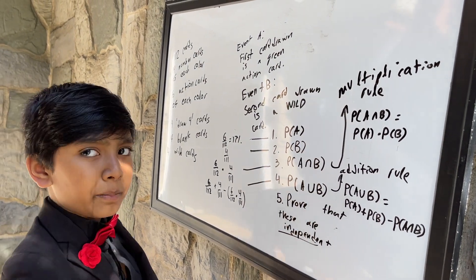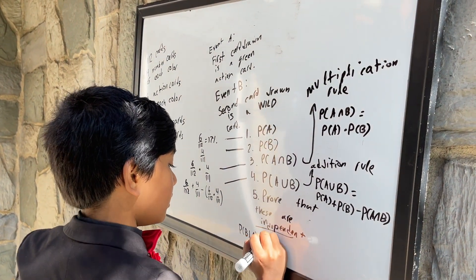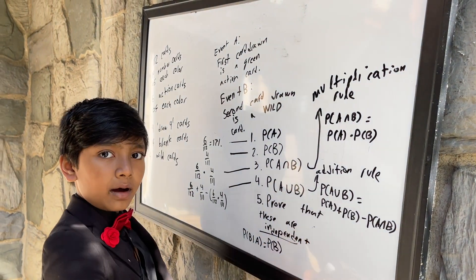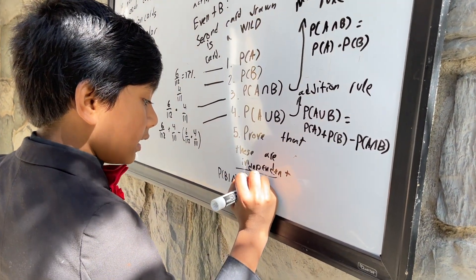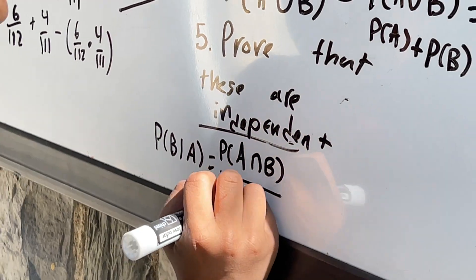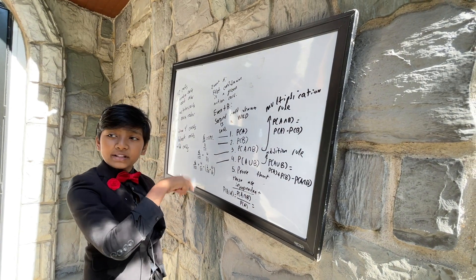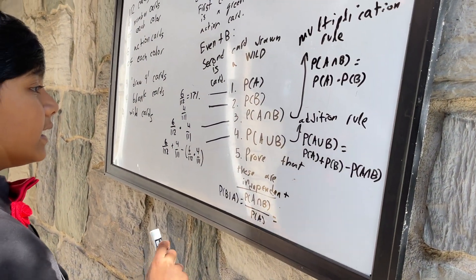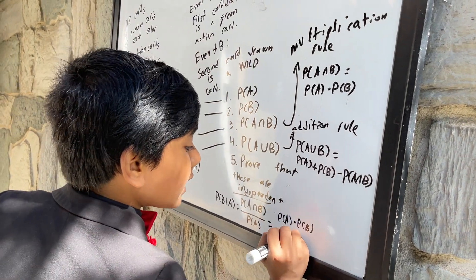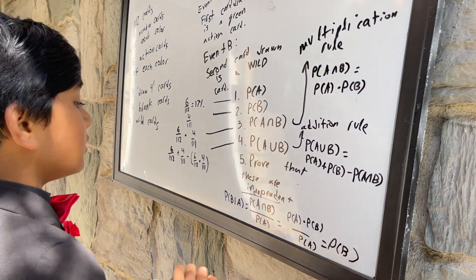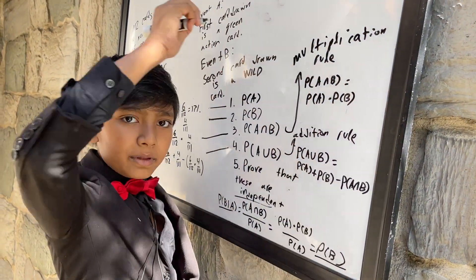The addition rule: P of A or B equals P of A plus P of B minus P of A and B. And five: proving these are independent. These are independent because the probability of B happening given that A happens is the same as the probability of B happening by itself. P of A and B divided by P of A — for independent events that equals P of A times P of B divided by P of A, leaving you with just P of B.